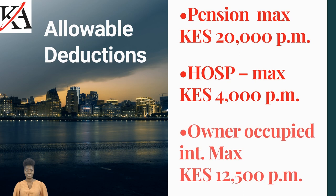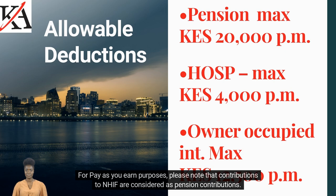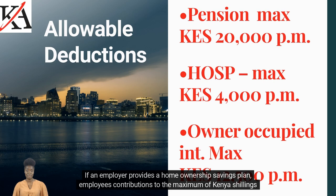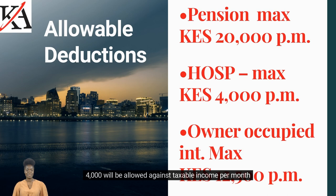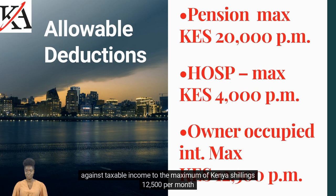Pension contributions by an employee to a registered pension scheme are tax allowable to the maximum of Kenya shillings 20,000 per month. For pay-as-you-earn purposes, please note that contributions to NHIF are considered as pension contributions. If an employer provides a home ownership savings plan, employees' contributions to the maximum of Kenya shillings 4,000 will be allowed against taxable income per month. Lastly, any interest paid against the mortgage for a home occupied by the employee is an allowable deduction against taxable income to the maximum of Kenya shillings 12,500 per month.